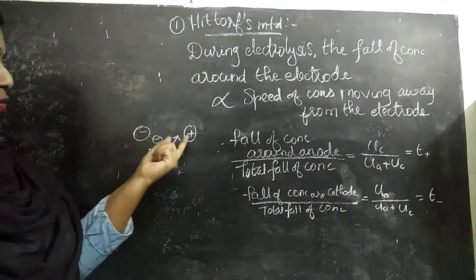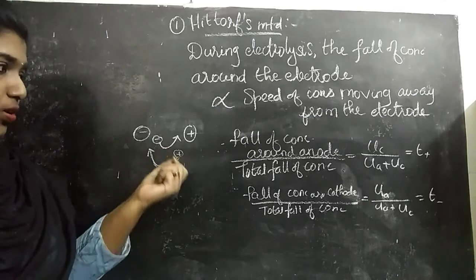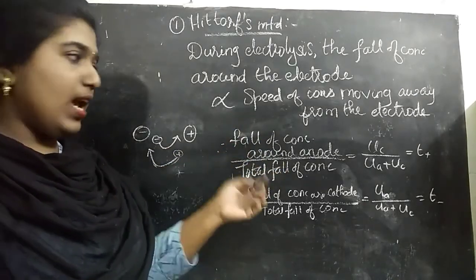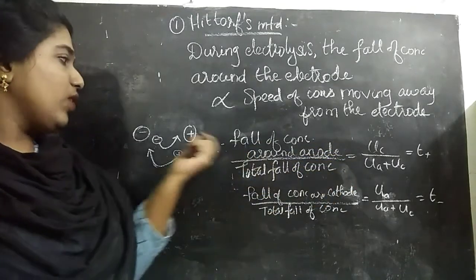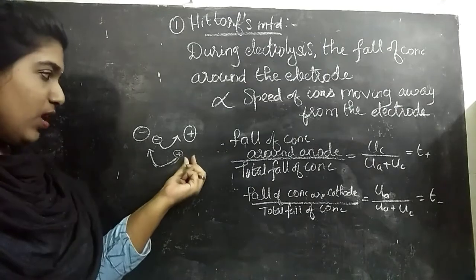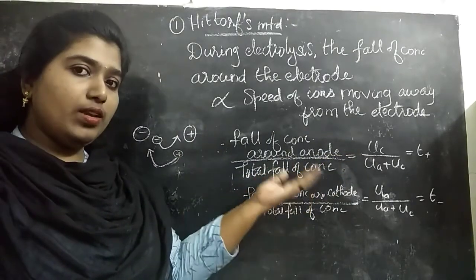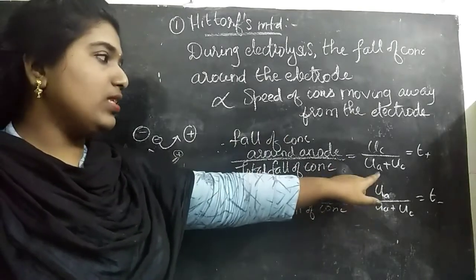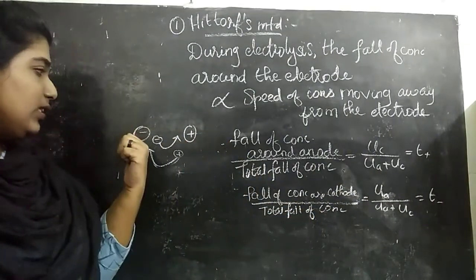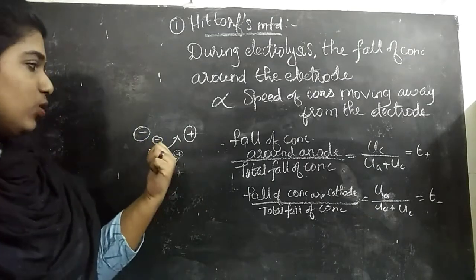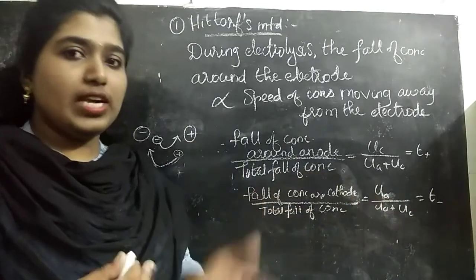Considering two electrodes: the fall of concentration around the anode divided by the total fall of concentration equals the speed of the cation (Uc) divided by (Ua + Uc), which is T+ — the transport number of the cation. Near the cathode, the fall in concentration of the anions occurs, so the fall of concentration at the cathode divided by the total gives Ua / (Ua + Uc), which is T− — the transport number of the anion.